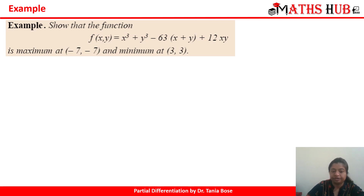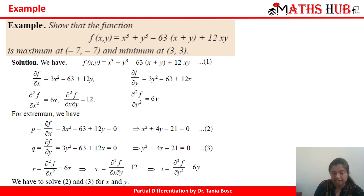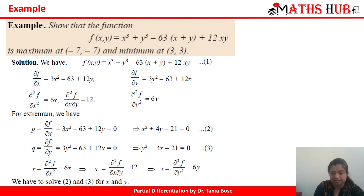In the next example, we need to show that the function f(x, y) has a maximum value at (-7, 7) and a minimum value at (3, 3). We calculate ∂f/∂x = 3x² - 63 + 12y and ∂f/∂y = 3y² - 63 + 12x. Putting them equal to 0 gives the equations x² + 4y - 21 = 0 and y² + 4x - 21 = 0. We also calculate ∂²f/∂x² = 6x, ∂²f/∂x∂y = 12, and ∂²f/∂y² = 6y as r, s, and t respectively.